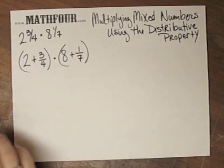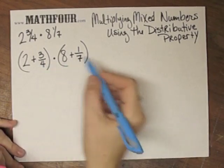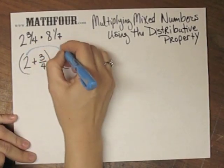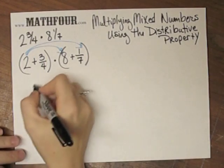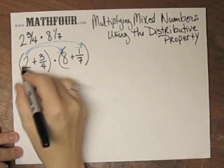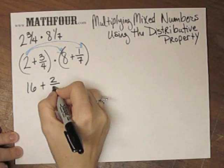So this is two binomials, if you will. I can multiply: 2 times 8 is 16, plus 2 times 1 seventh is 2 sevenths.